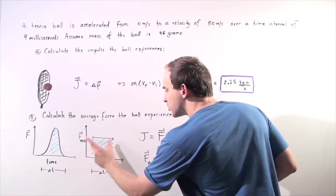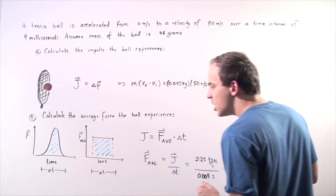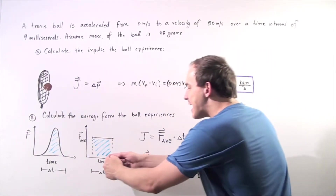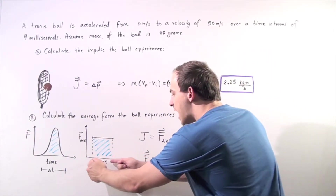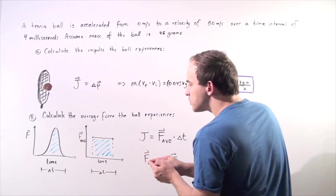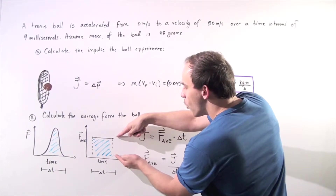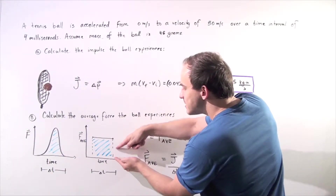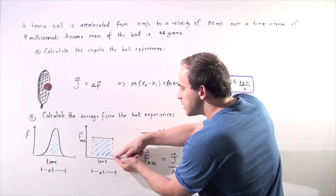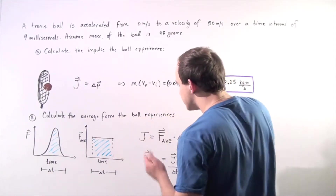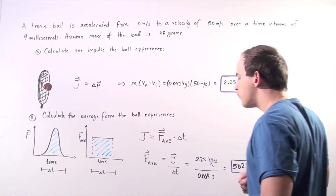Because this is a rectangle, we simply take the change in time and multiply by the average force. This vertical distance is the average force.